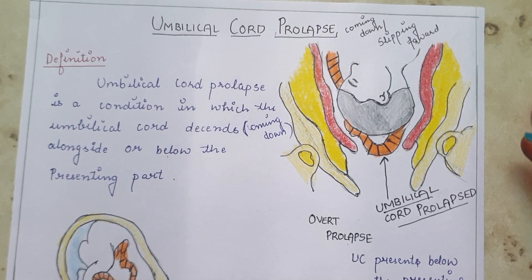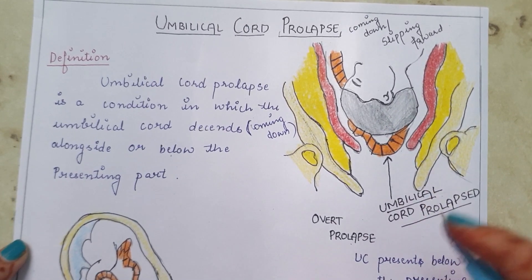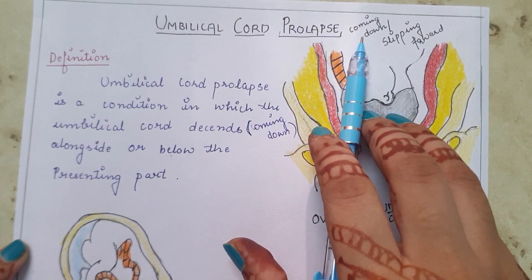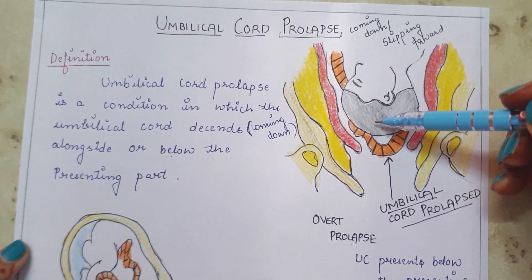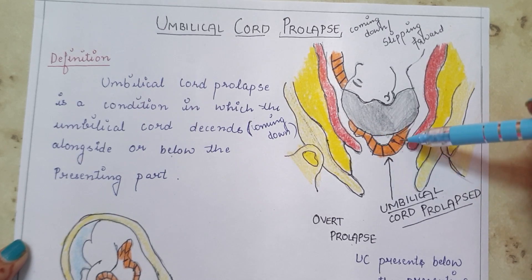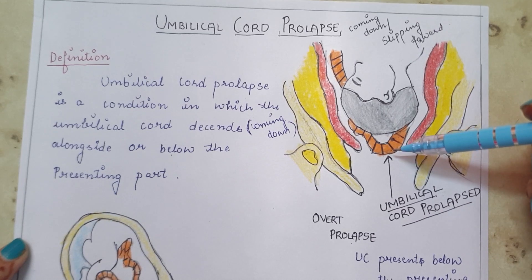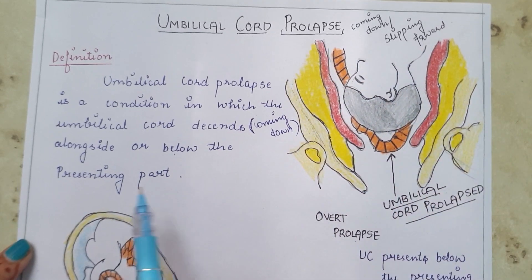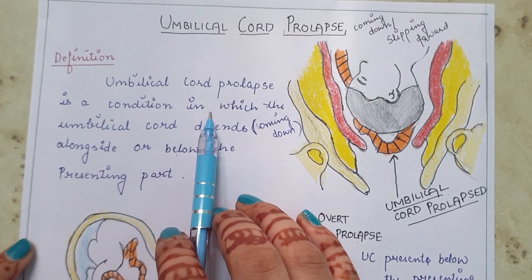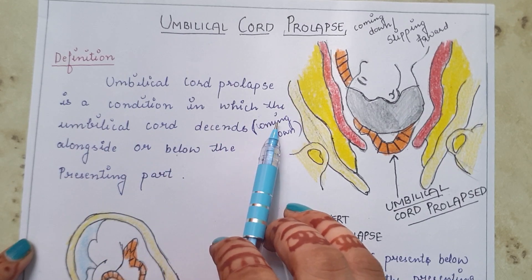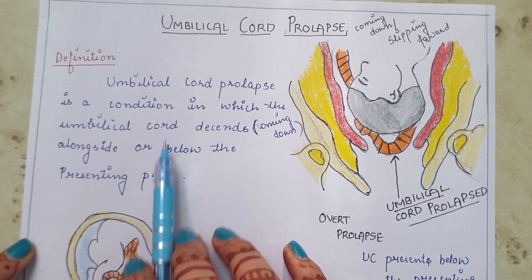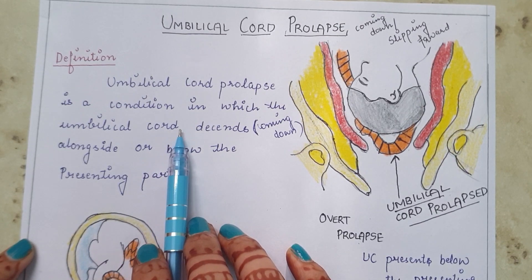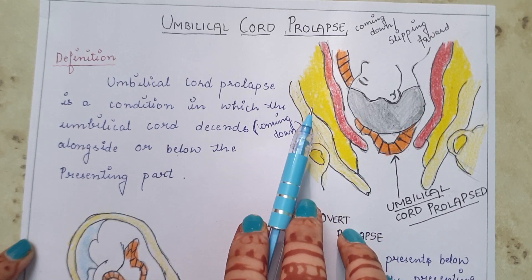In this video we will discuss umbilical cord prolapse, a very important topic from the examination point of view. The term 'prolapse' means coming down or slipping forward. Umbilical cord prolapse is a condition in which the umbilical cord descends downward alongside or below the presenting part. The umbilical cord may lie along with the presenting part or below the presenting part.